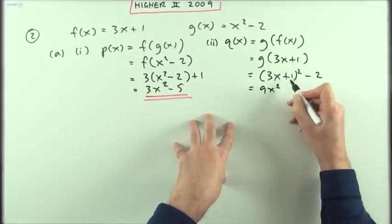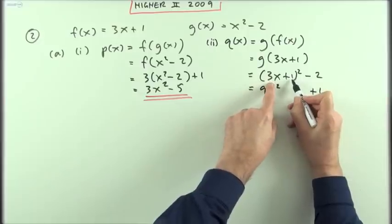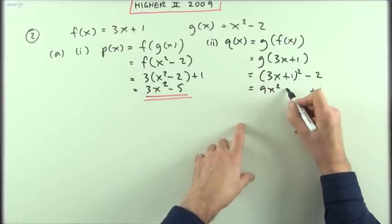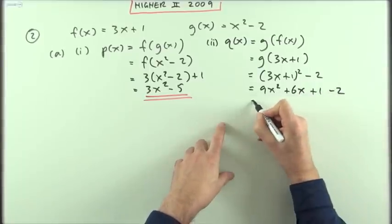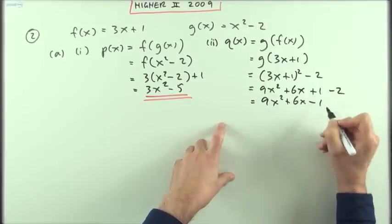Square the bracket: square the first, 3x times 3x is 9x squared. Square the last, plus one. Twice the product: the product is 3x, doubled is plus 6x. Unfortunately I have to go minus two, so 9x squared plus 6x minus 1.